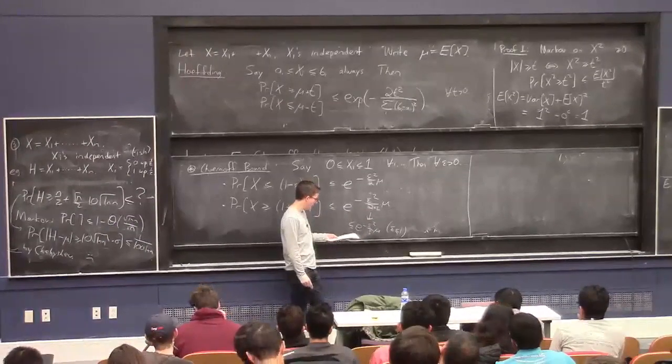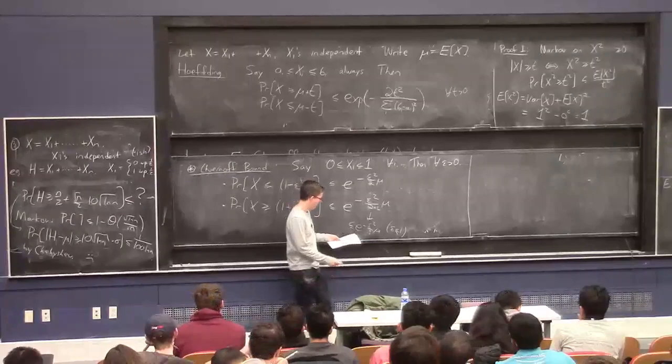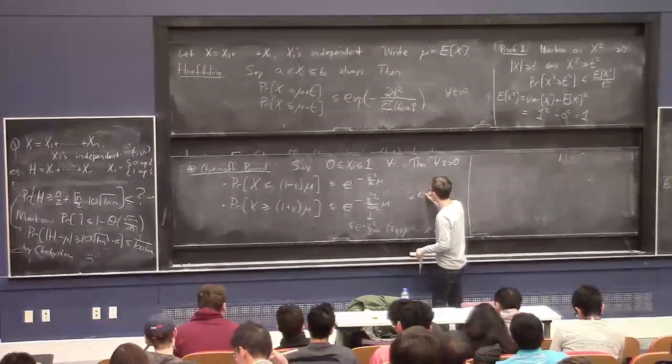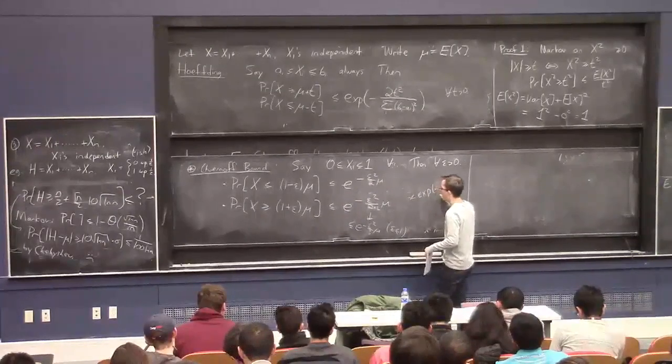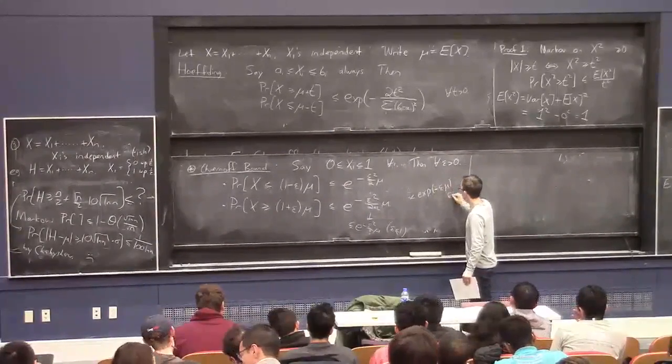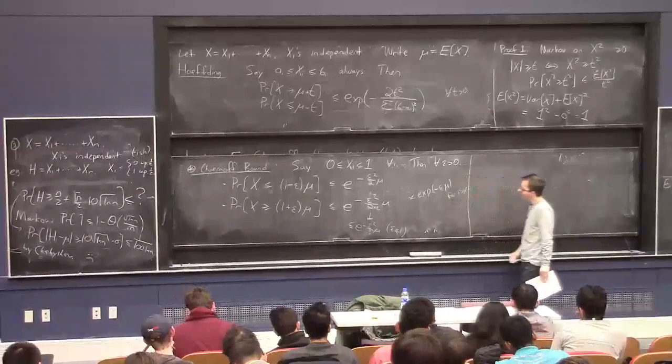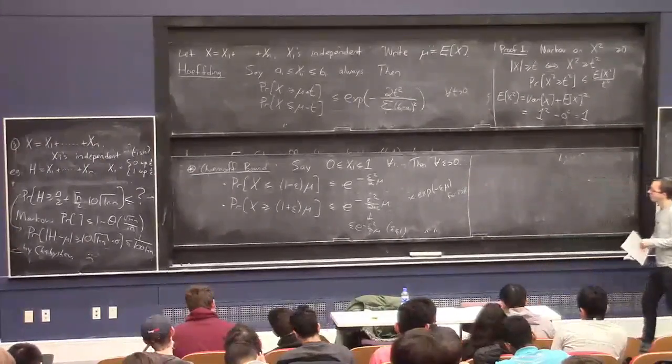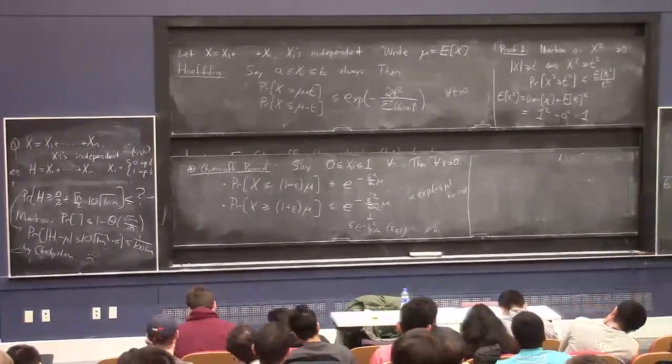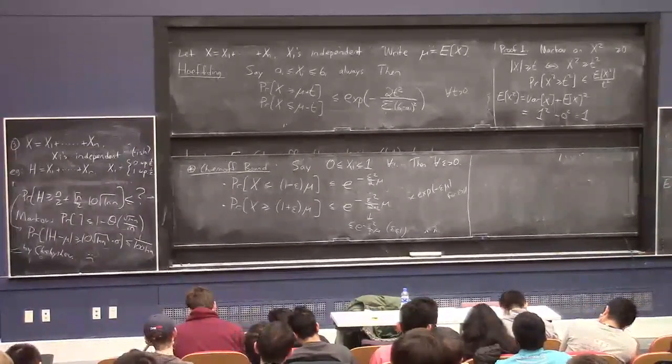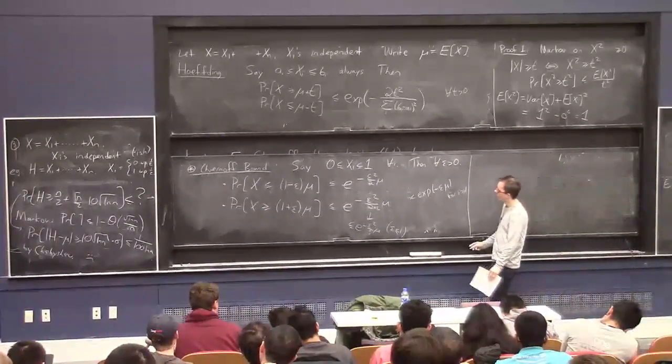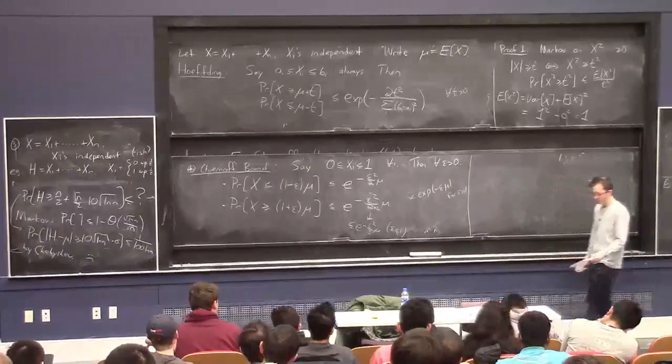So, this is sort of like, for large epsilon, it's roughly e to the minus epsilon times mu for large epsilon. So, memorize this if you can, because you'll use it 100 or 1,000 times in your life. Hopefully.